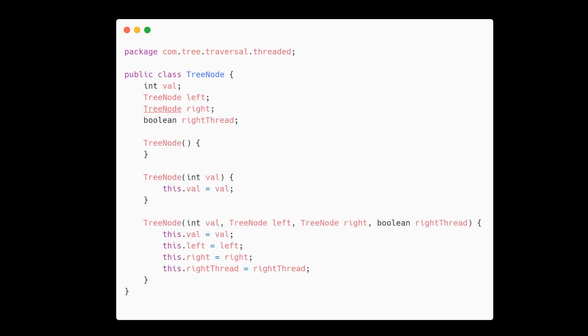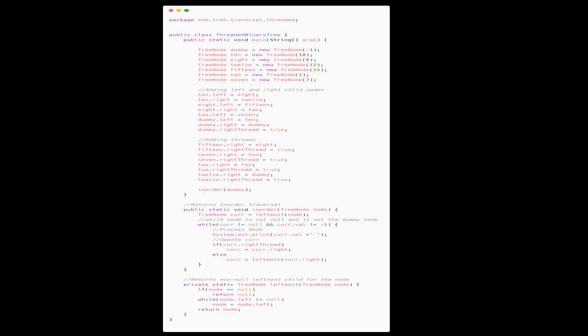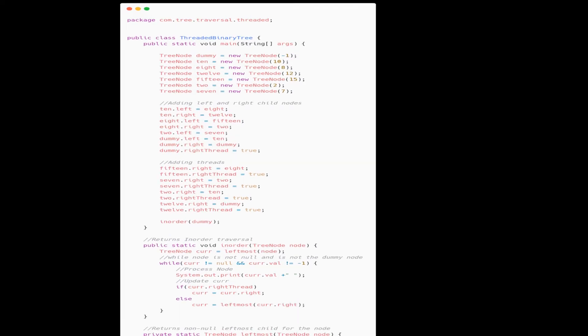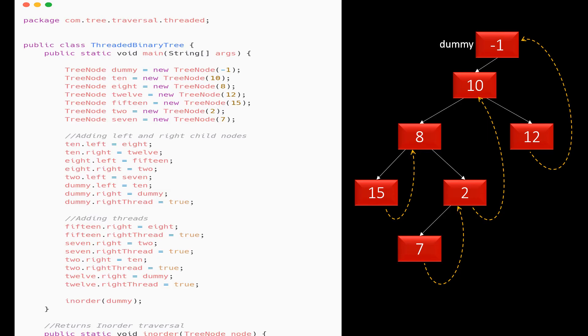Here is the tree node class. It has one more additional attribute for right thread. Rest is the same as we have been seeing throughout the course. Here is the main class. In this, we have a main method that creates a tree.